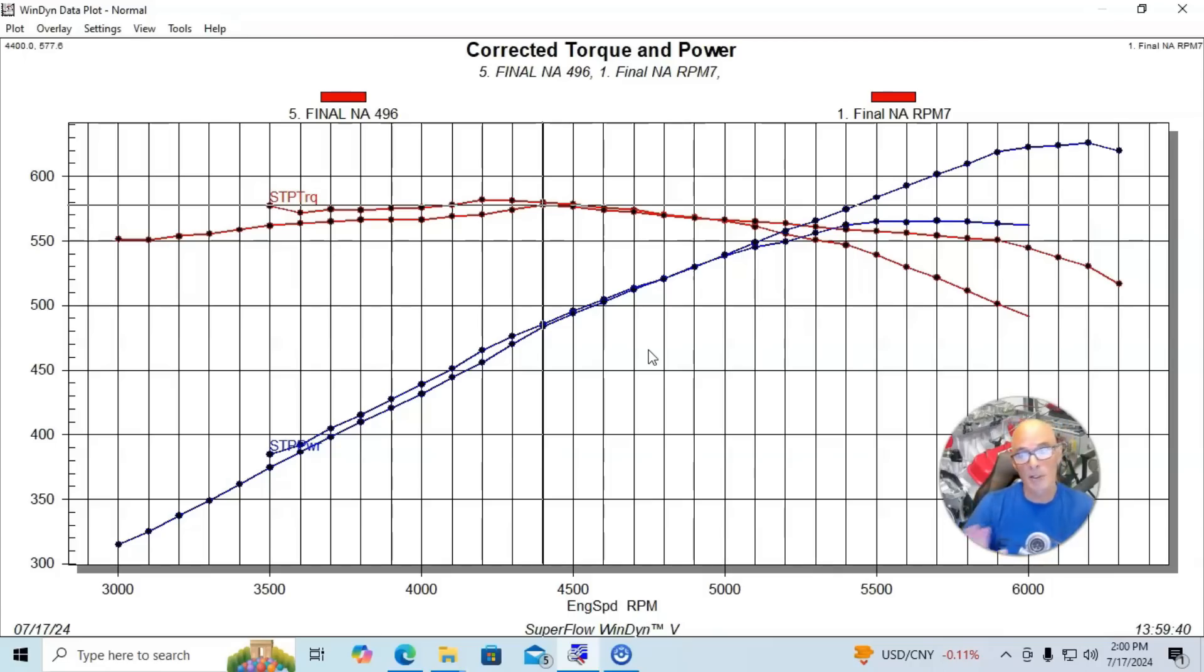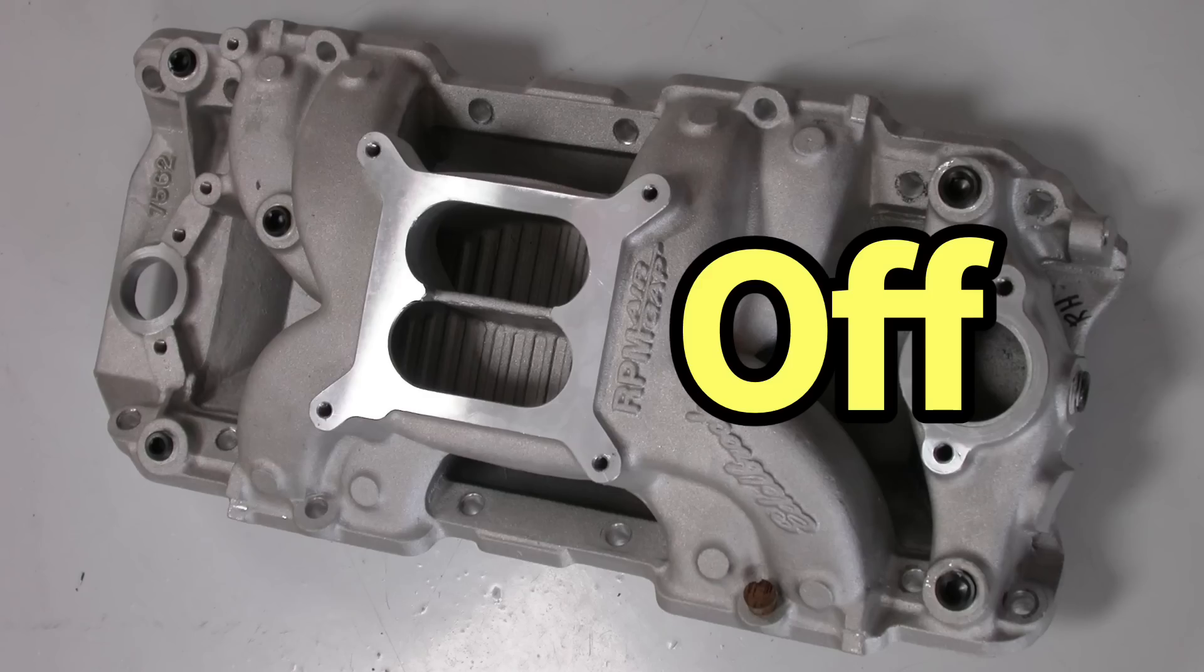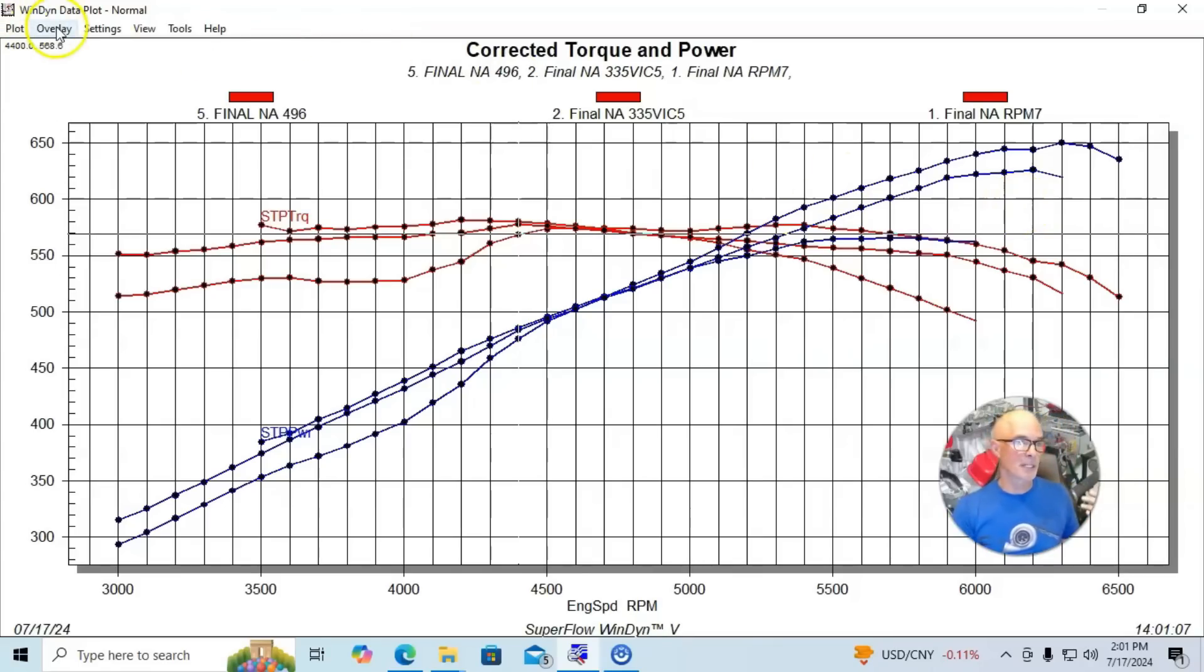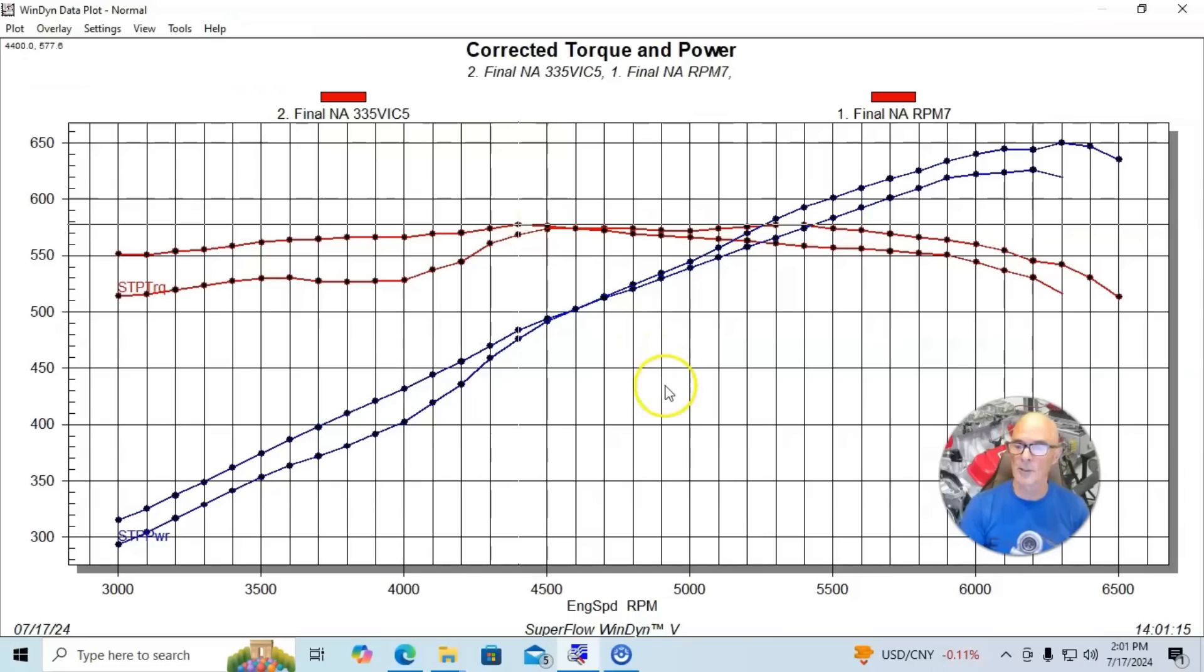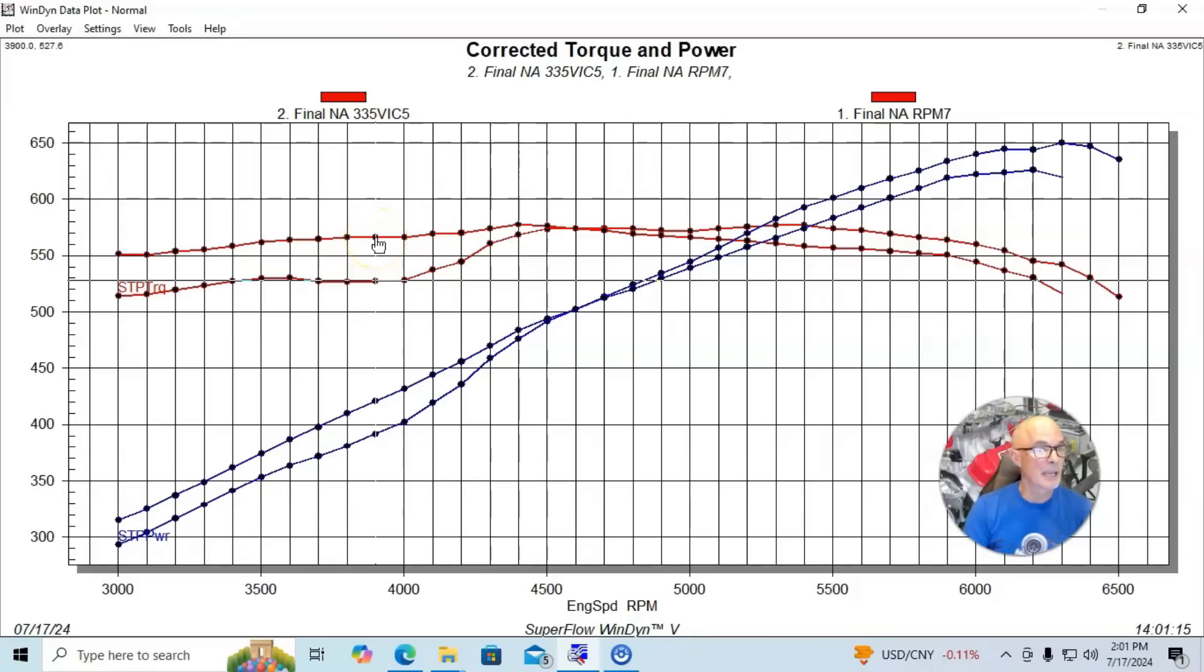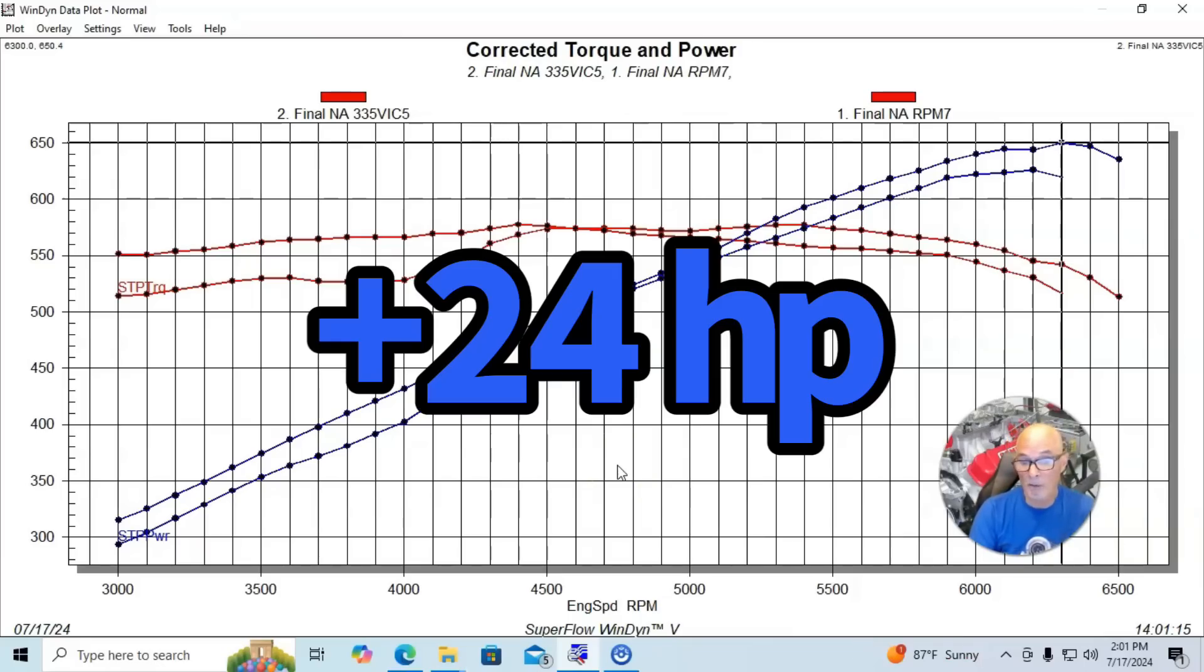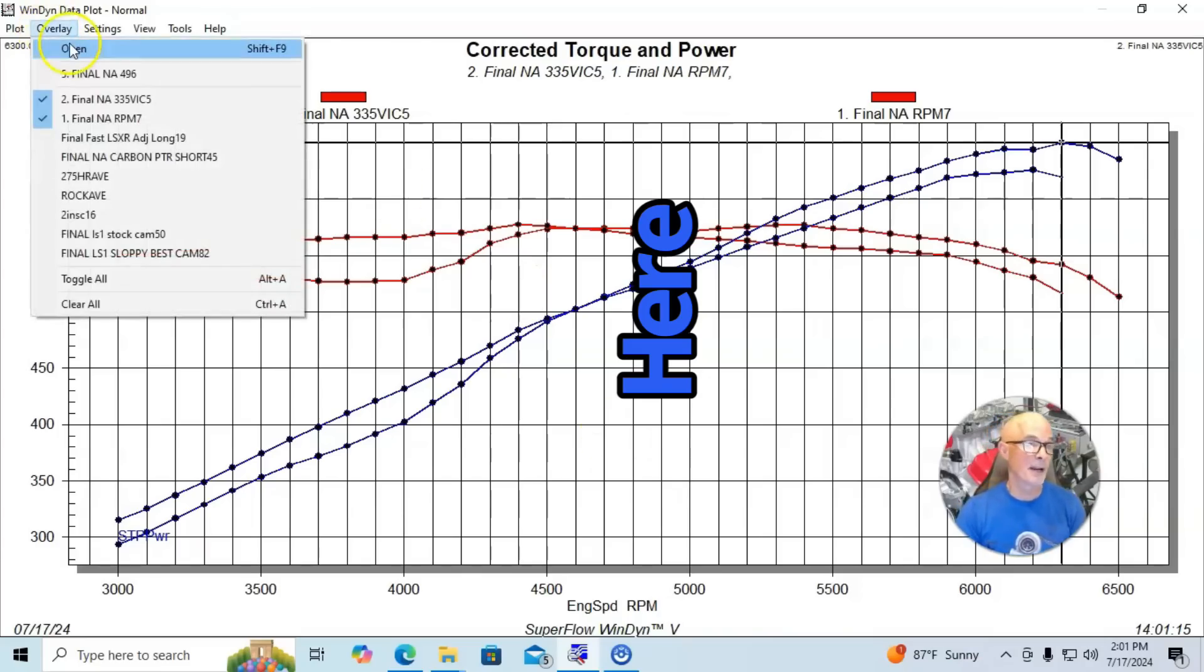But we weren't done there. What we did is thinking, this motor now has enough cylinder head on it and enough camshaft. What it needs now is really more intake manifold. So what we did was replace the RPM air gap intake manifold with a Victor Jr., a 454R intake manifold. The single plane lost power to the dual plane all the way out to 4,500, by as much as 40 foot pounds of torque, but did make more peak power, 650 horsepower, and made more power from about 4,800 on up.